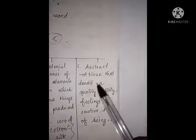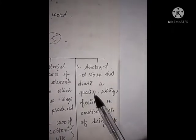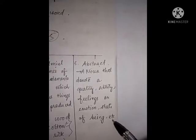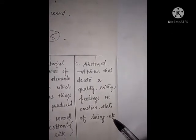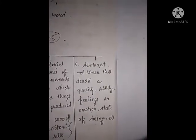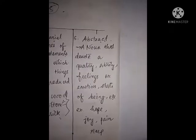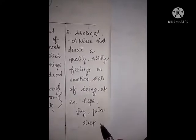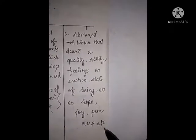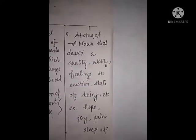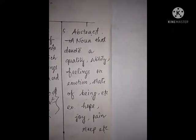Number five — abstract noun. What is abstract noun? A noun that denotes a quality, ability, feelings or emotion, state of being, etc. — this is abstract noun. Examples of abstract noun are: hope, joy, pain, sleep, etc. These are the examples of abstract noun — they denote quality, ability, feelings or emotion, and also state of being.